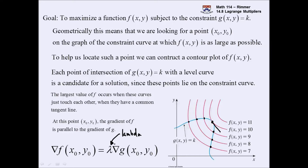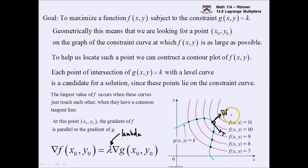They share this common tangent, and we said that the gradient is perpendicular to the tangent. So this would be the gradient of f, and this would be the tangent to f. The tangent to g could point in the other direction as long as it's parallel — it doesn't have to be the same length. They share the fact that the gradients point in the same direction. Gradients are normal to the level curves.